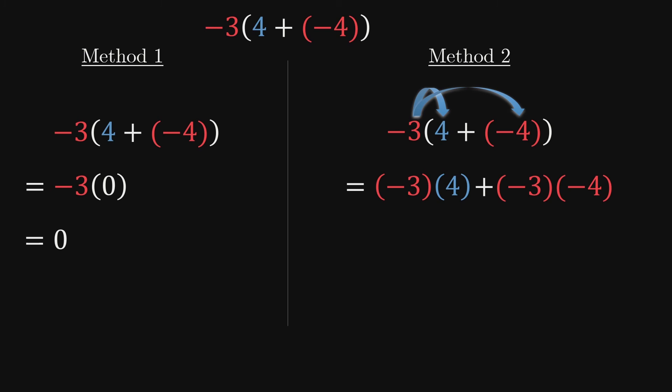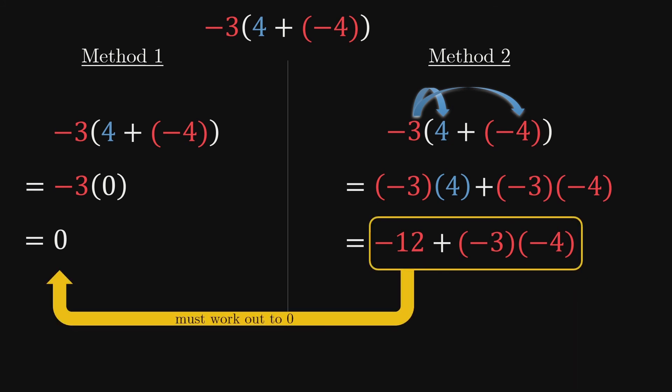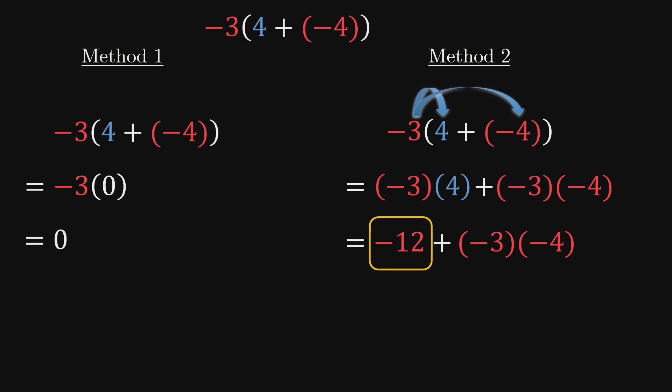We know that negative 3 times 4 is negative 12, since it's just 4 groups of negative 3. But suppose we had no idea what negative 3 times negative 4 is. Remember from our earlier calculation that we should be getting a final result of 0 here. That is, negative 12 plus something is supposed to work out to 0.